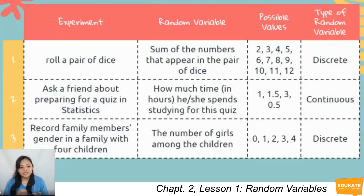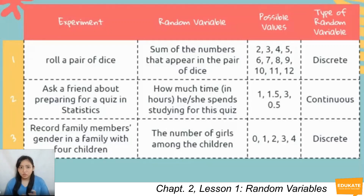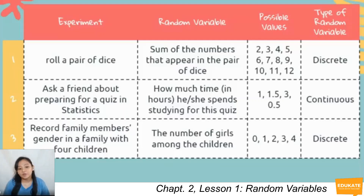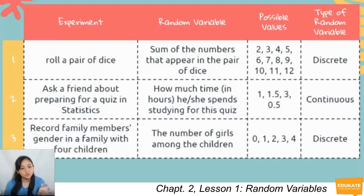For the second experiment, asking a friend how much time in hours they spent studying for a statistics quiz, the possible values can be 1, 1.5, 3, or 0.5 hours. Since it's not a finite number of possible values and lies on a continuum, the type of random variable is continuous. For the third experiment — recording family members' gender in a family with 4 children — the random variable is the number of girls, with possible values 0, 1, 2, 3, or 4, which is finite, so the type is discrete.